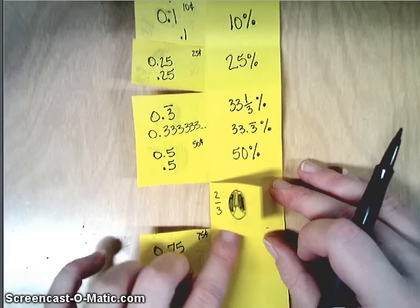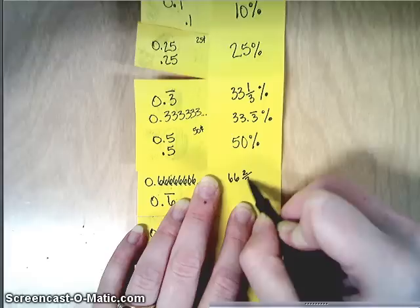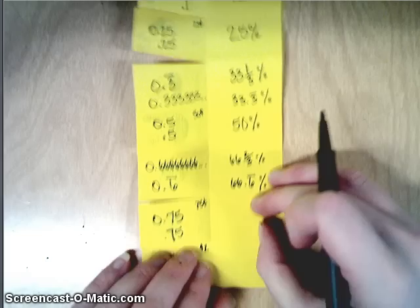Two thirds, point six repeating, it's going to be similar to this one third up here. So it could be sixty-six and two thirds, or sixty-six, point six, bar over this last six.